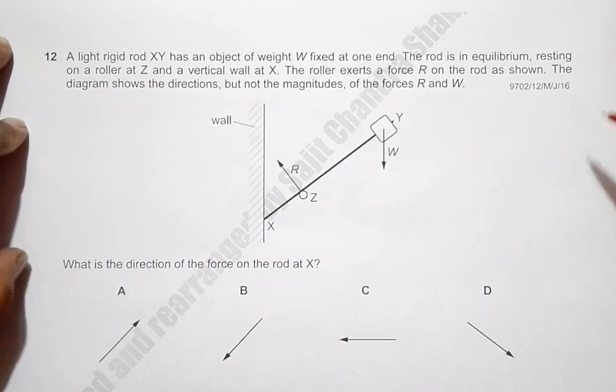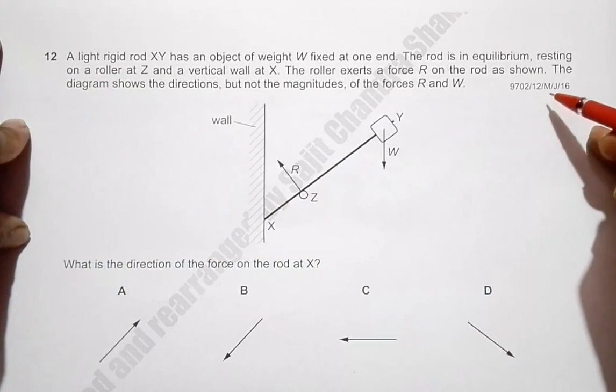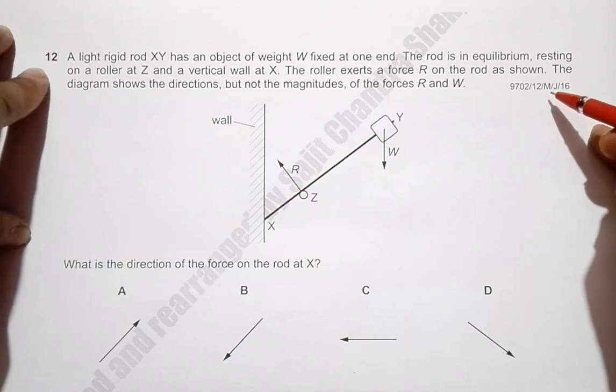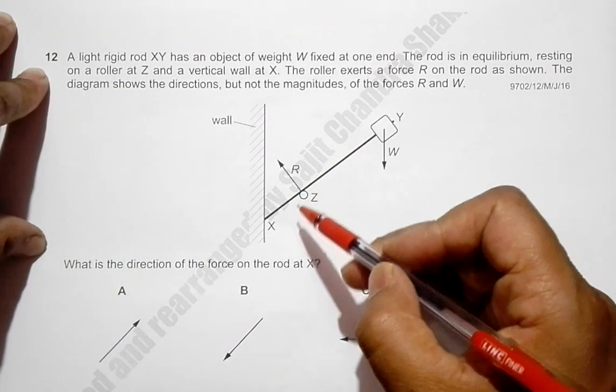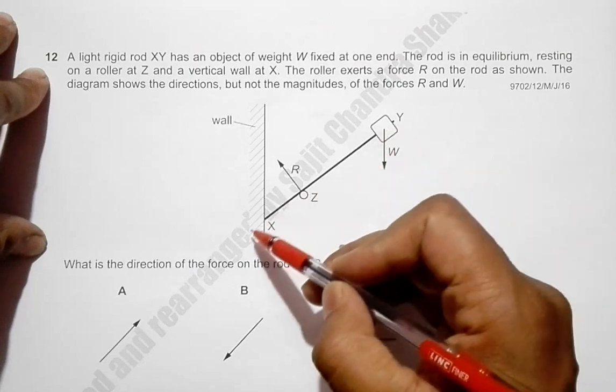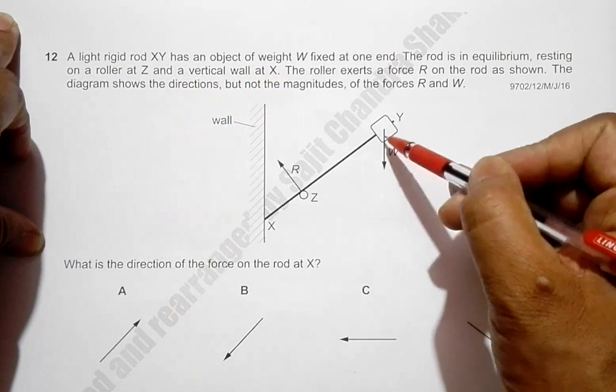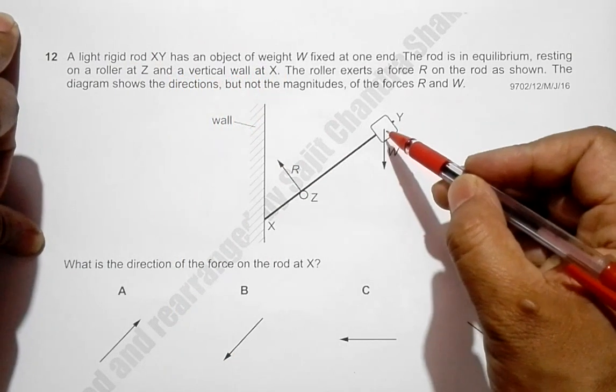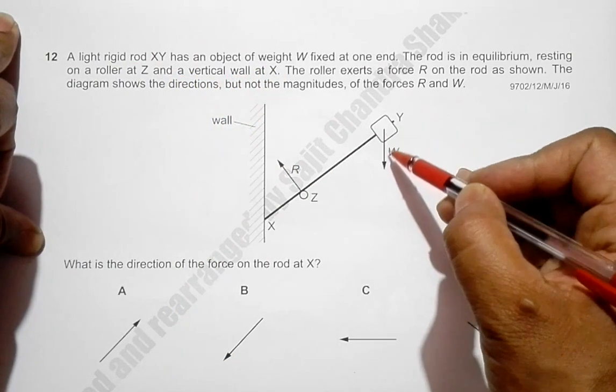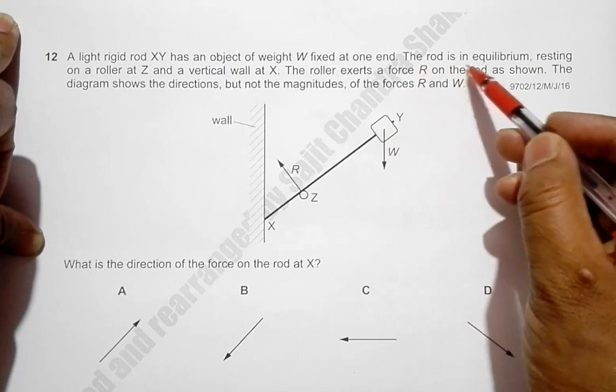This is the question from May June 2016 paper 12, question number 12. It has a light rod XY with an object of weight W fixed at one end, and the weight is acting vertically down. The rod is in equilibrium.